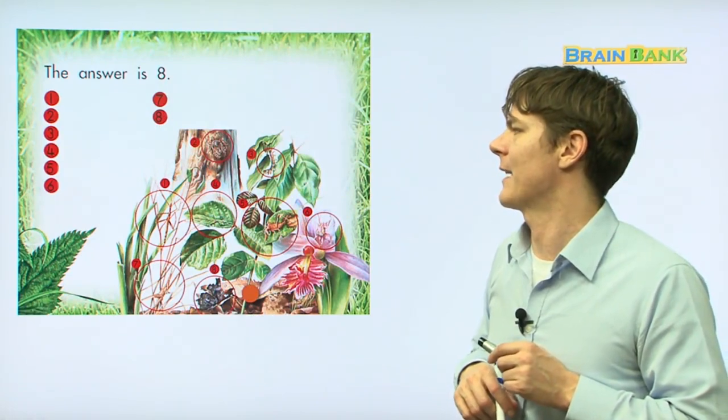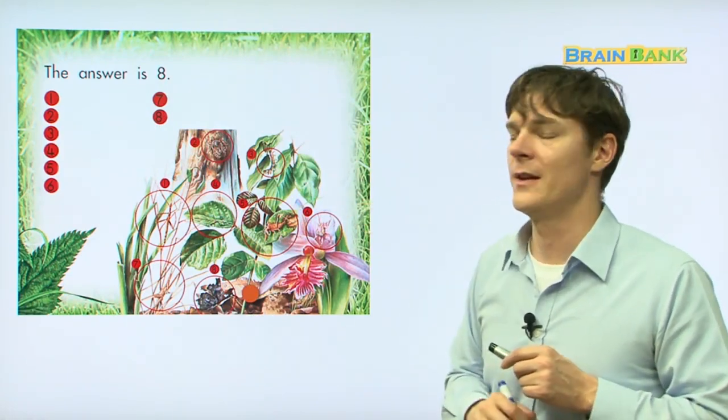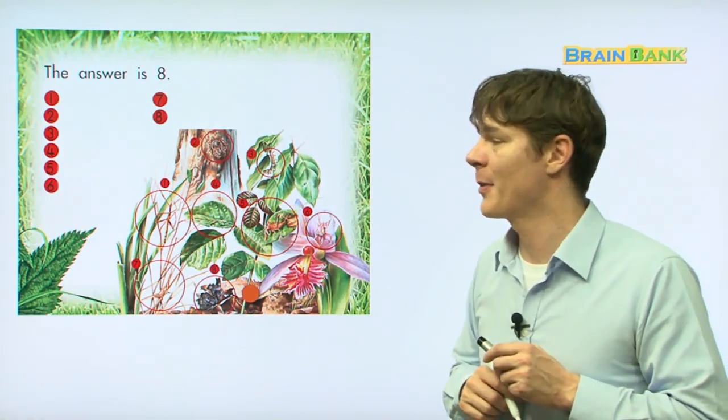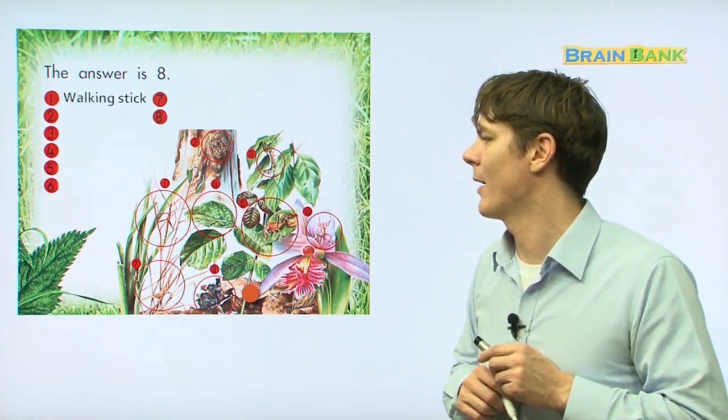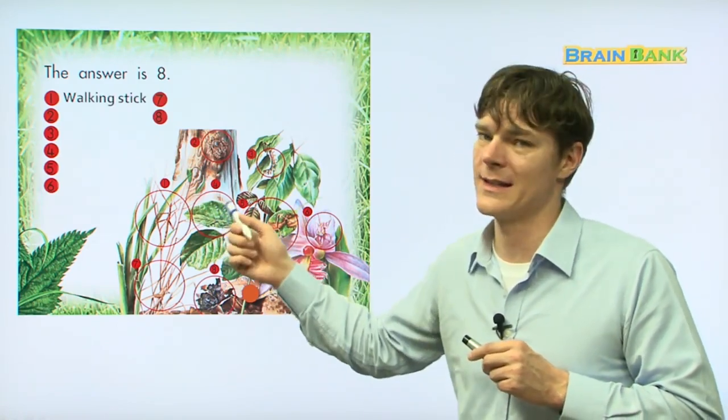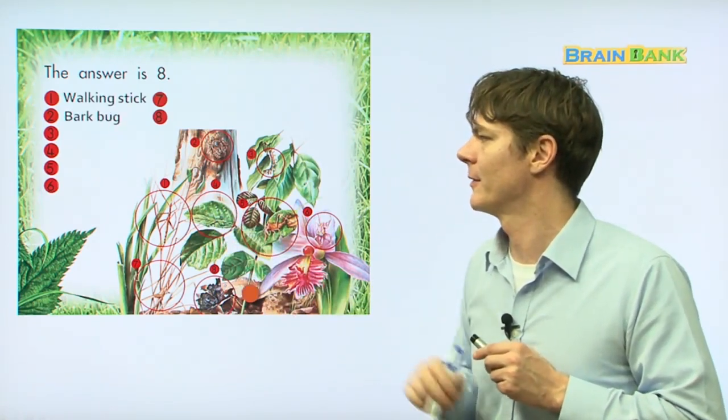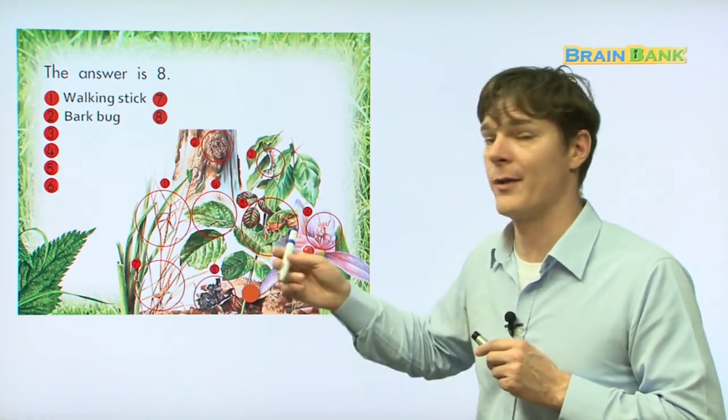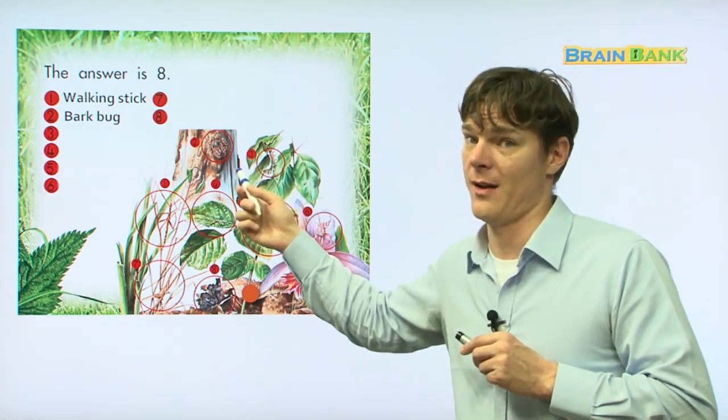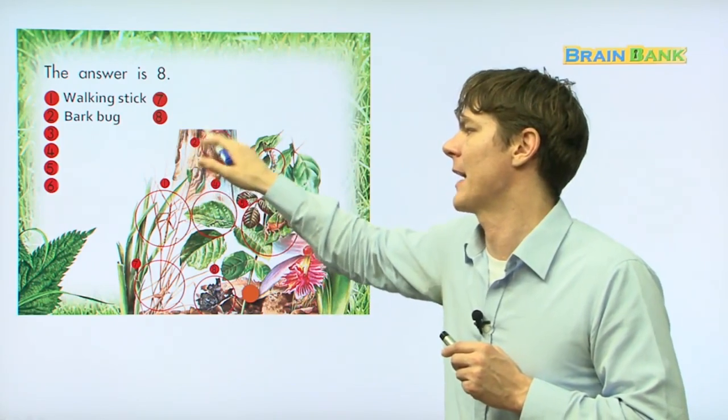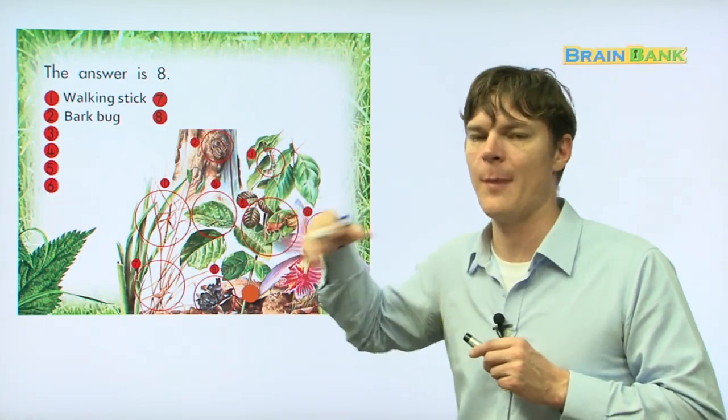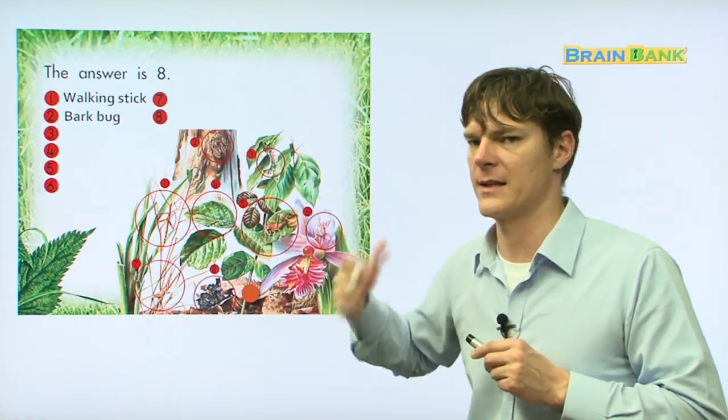The answer is eight, and I think we found all of them. So everyone, repeat after me. Number one, walking stick. Everybody, walking stick. Number two, bark bug. Everyone, bark bug. The bark is like the skin of the tree. Alright, it's like the skin of the tree.